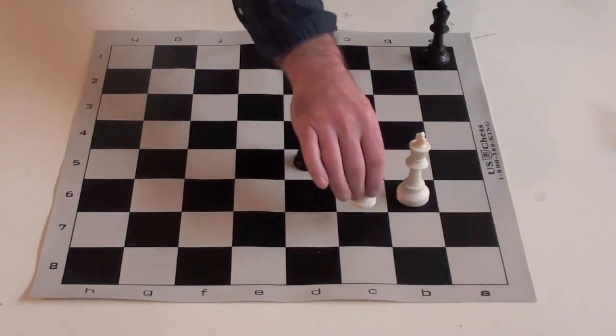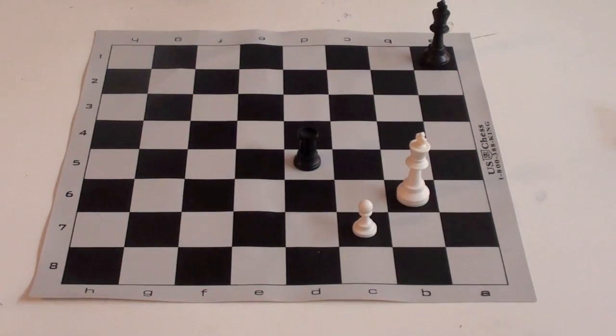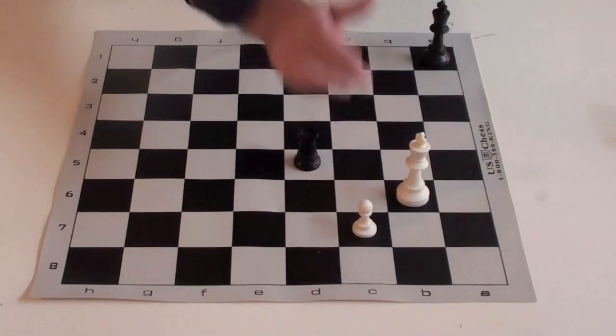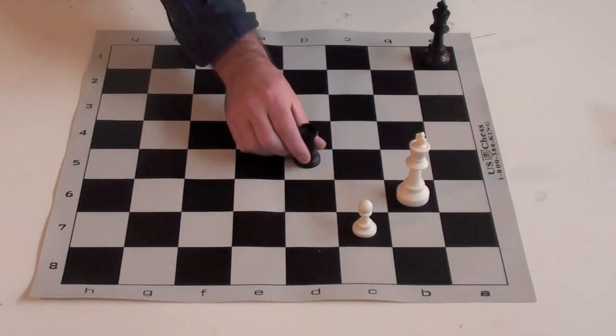So the best move for white is just to bring his pawn up to c7. It's one move away from promoting and it stops the rook from coming down here to d8.